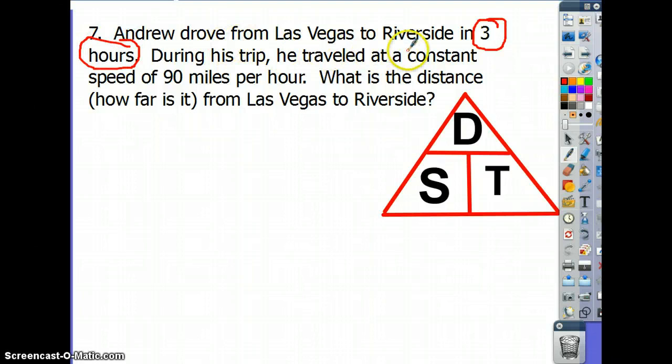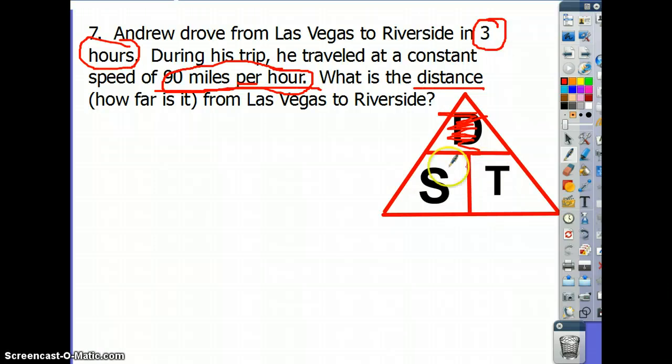During this trip, he traveled at a constant speed of 90 miles per hour. I need to really look at this number. This number right here is a speed. I know because it has the word per in there. So I circle and underline it because it includes both distance and time. What is the distance? How far is it from Las Vegas to Riverside? This is actually a true story, by the way. Okay, so since they asked me for distance, I cover up the D. What I have left over is S next to the T, which means my formula for distance equals speed times time.